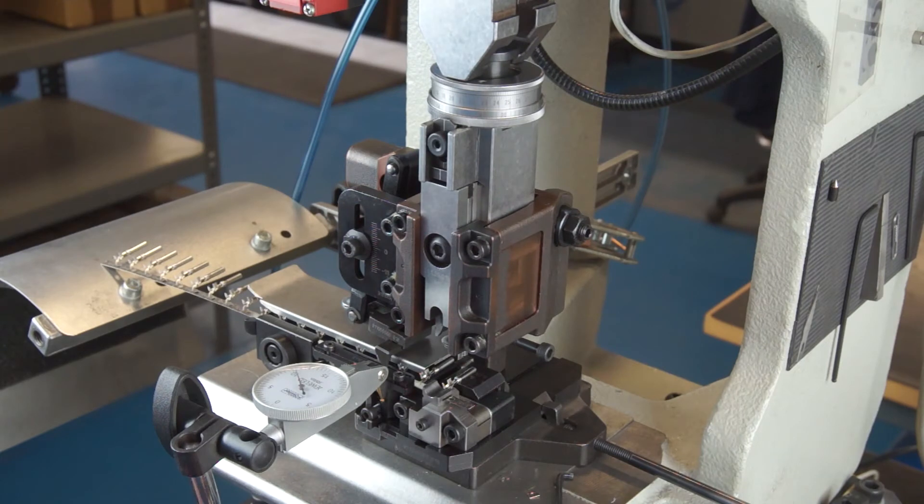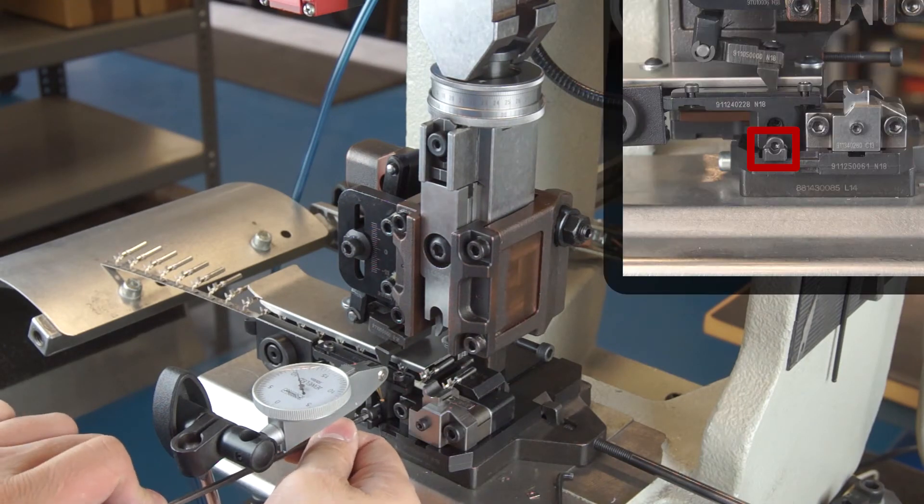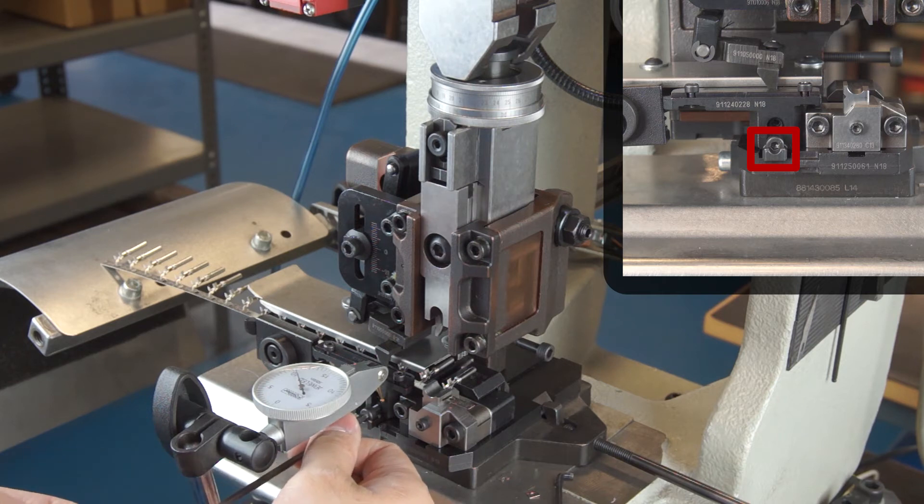Next, you will loosen the locking wedge to be able to move the slide forward and back. Take a 3mm hex wrench and turn the screw counterclockwise by one or two turns.